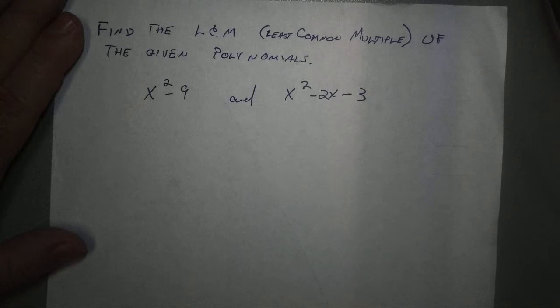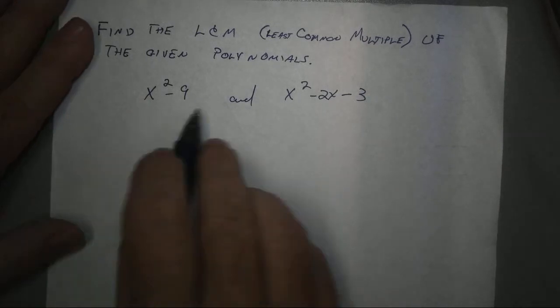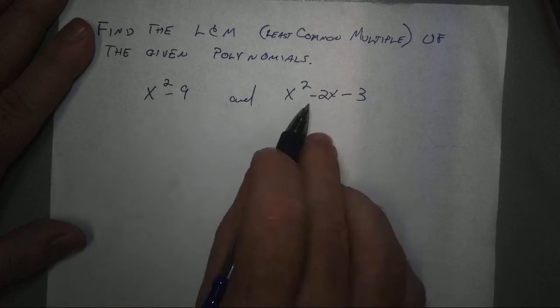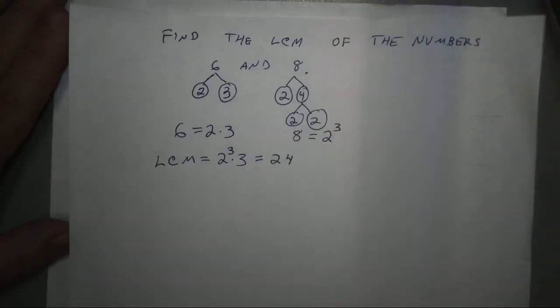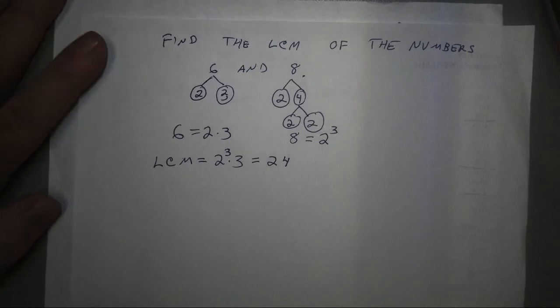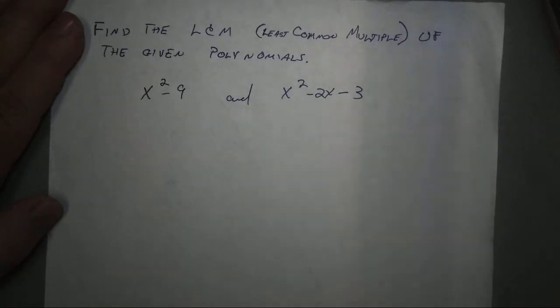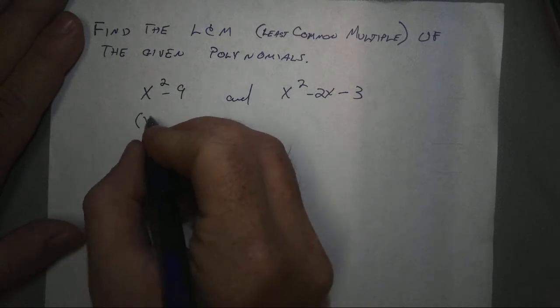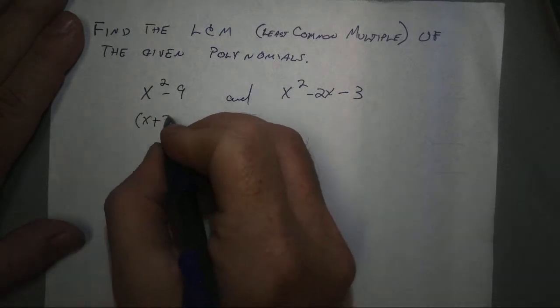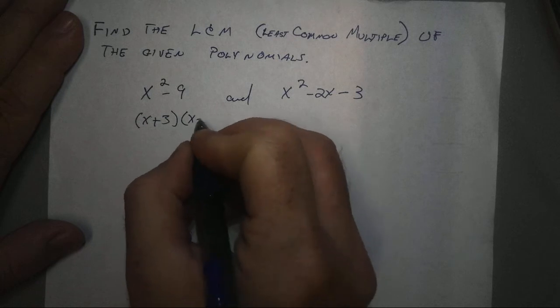Back to our original problem, to find the least common multiple of these two polynomials, I first need to factor them, just like I wrote the factor tree of my numbers. So, I can factor x squared minus 9, it's a difference of squares, x plus 3, x minus 3.